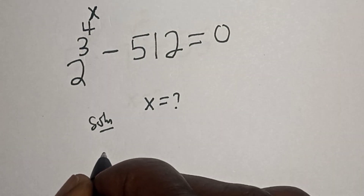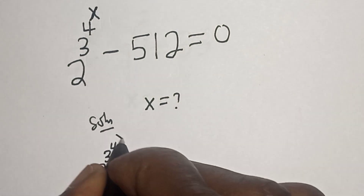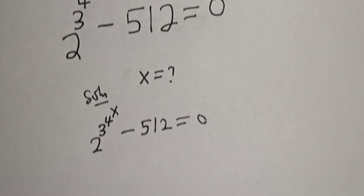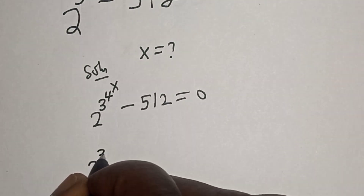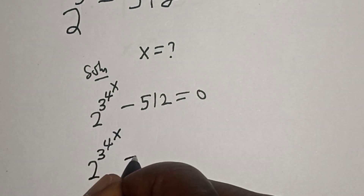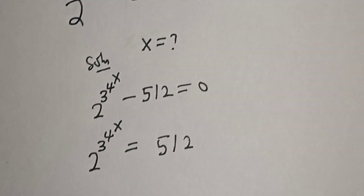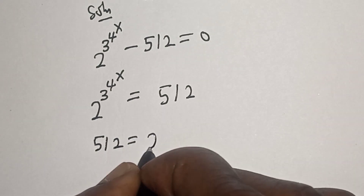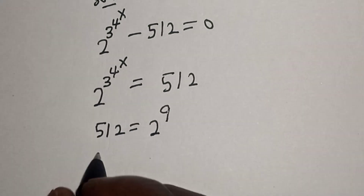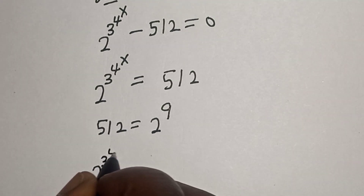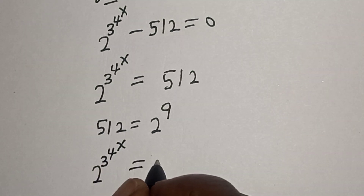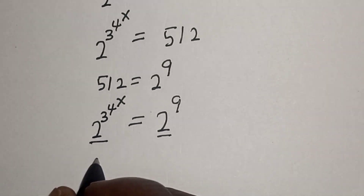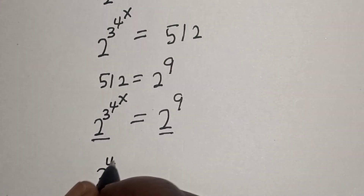We have 2 to the power of 3 to the power of 4 to the power of x, minus 512, is equal to 0. So 2 to the power of 3 to the power of 4 to the power of x equals 512. Since 512 equals 2 raised to the power of 9, we substitute and get 2 to the power of 3 to the power of 4 raised to power x equals 2 raised to power 9. They have the same base 2.